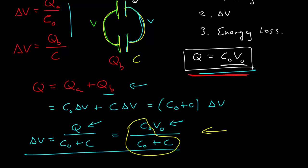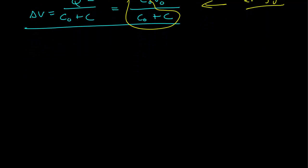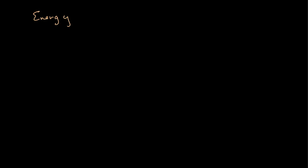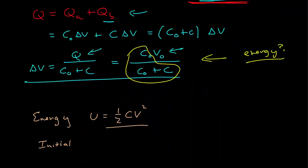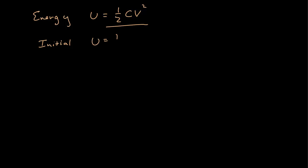So this is our new potential — it's lower than it was originally. Now let's look at the energy. The energy for a capacitor can be written as one-half times the capacitance times the voltage squared. Initially, we just had the one capacitor at potential V-naught, so the initial energy is one-half C-naught times V-naught squared.